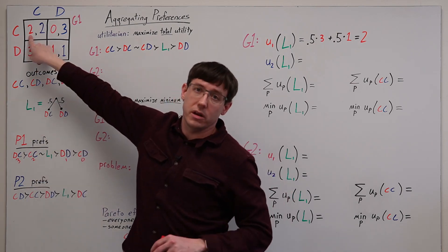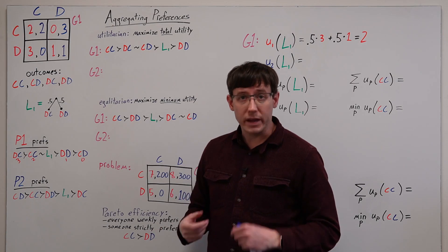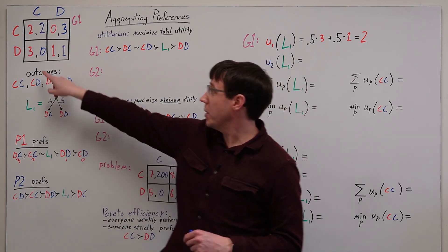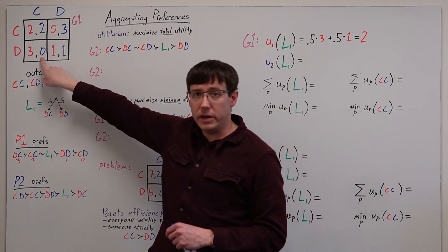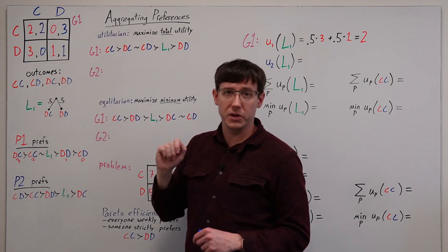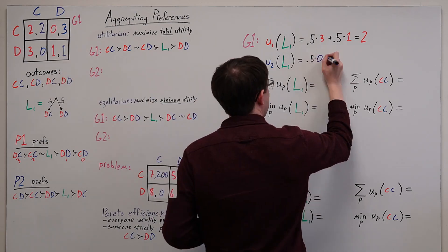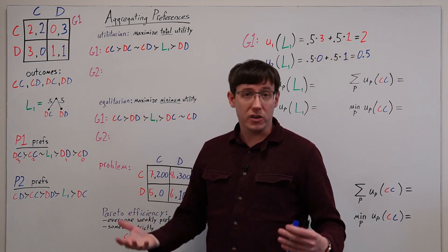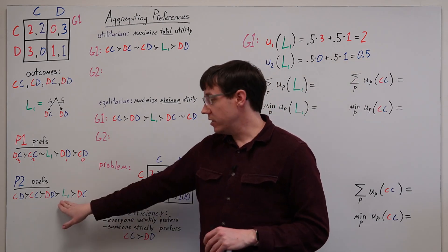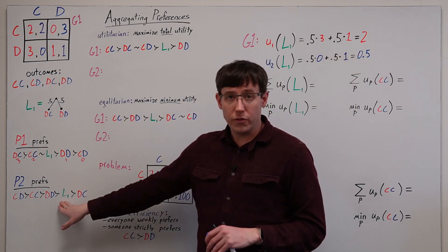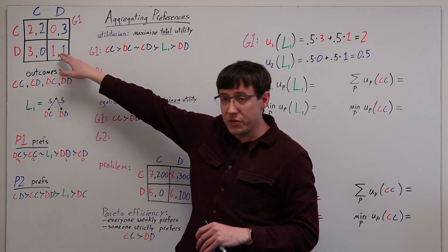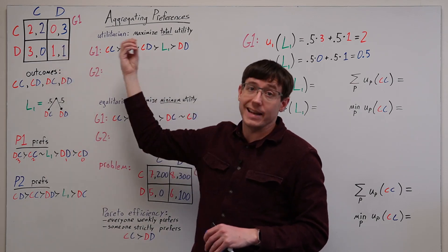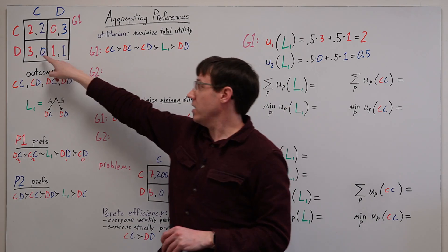For player 2, we can do the same calculation, adding up 0.5 times their utility here plus 0.5 times their utility here. And so with an expected utility of a half, this lottery is worse for player 2 than the both defect outcome, but it's at least better than the case where they get 0.